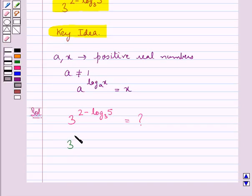Now, 3 to the power of 2 minus log 5 to the base 3 is equal to 3 to the power 2 upon 3 to the power log 5 to the base 3.